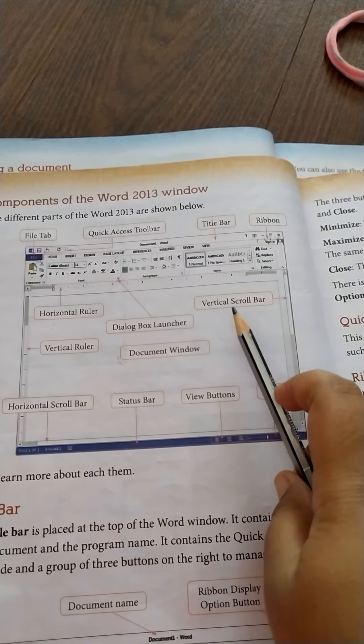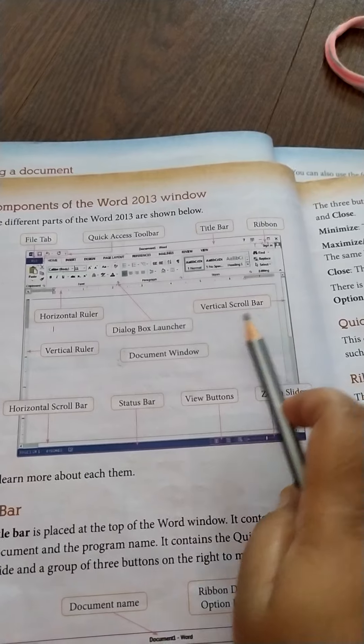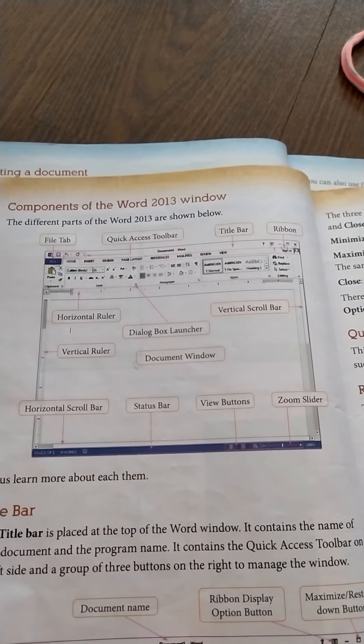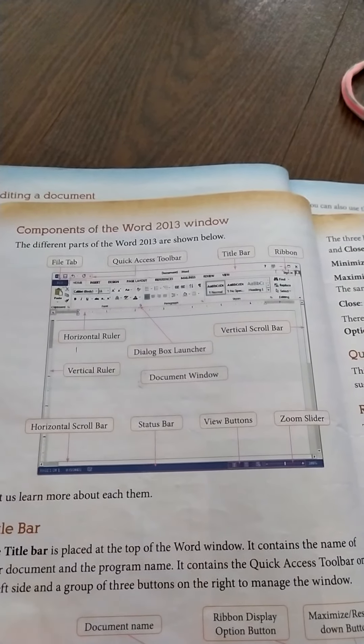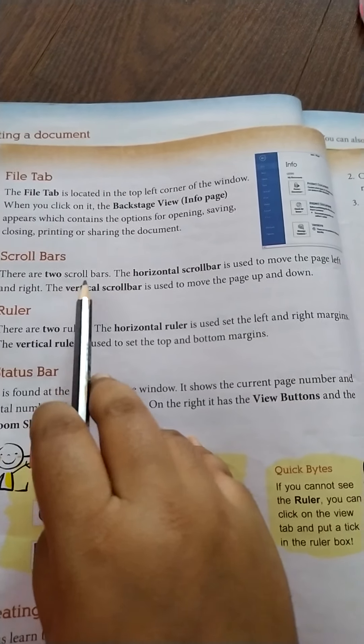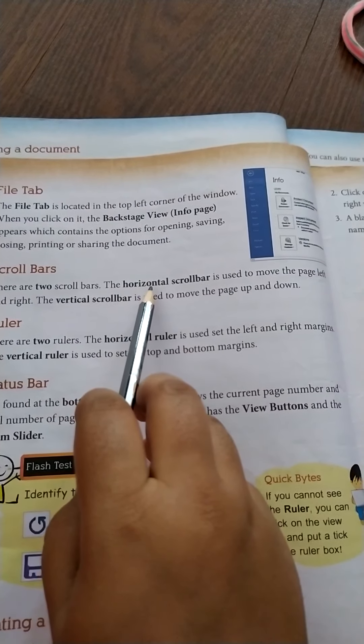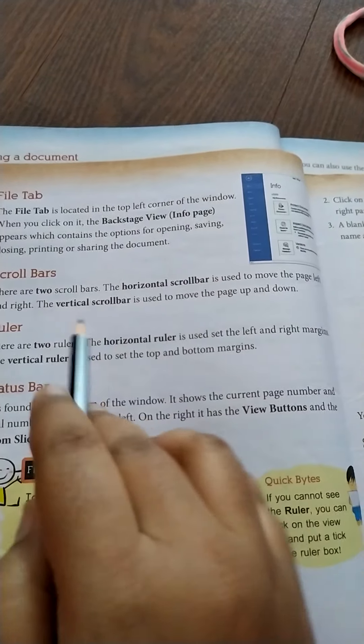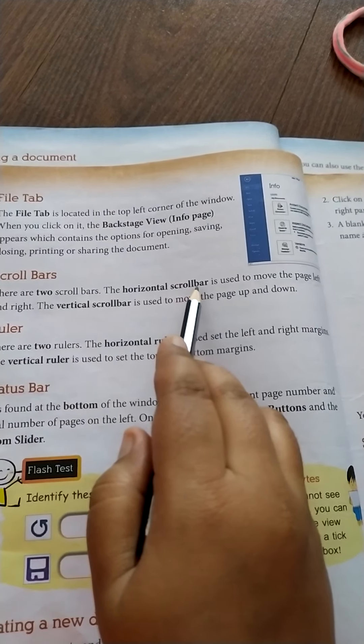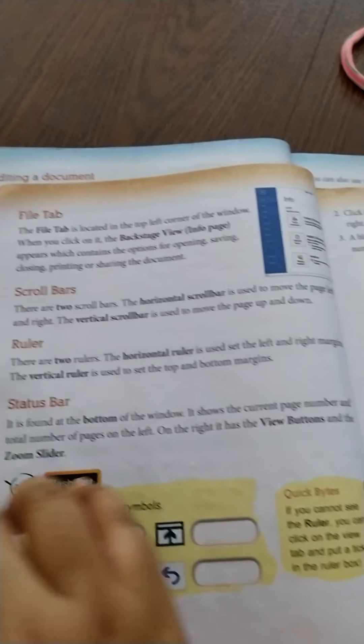Now we will talk about the scroll bars, the vertical scroll bar and the horizontal scroll bar. Two scroll bars are there. The vertical scroll bar is used to move the page up and down, and the horizontal scroll bar is used to move the page left to right.